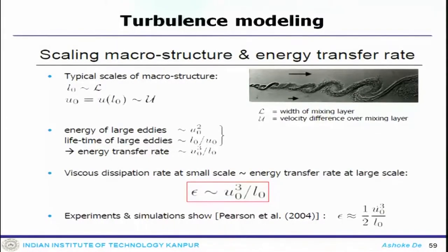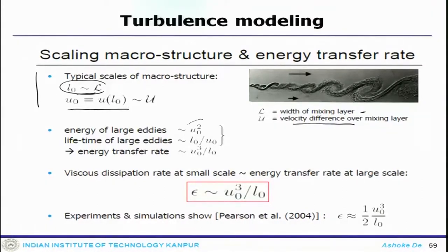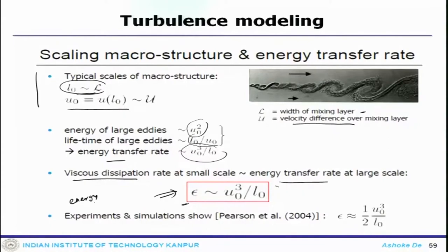To scale the energy and the macro structure rate: the picture shows how large scale eddies are formed. The width of the mixing layer and velocity U gives the macro structure length scale, which for a channel would be on the order of the channel diameter and inlet velocity. The energy of the large scales is of order U_0^2; the time scale is L_0/U_0; and the energy transfer rate is U_0^3/L_0. The viscous dissipation rate at small scale must be the same order as the energy transfer rate at the large scale, and epsilon (kinetic energy dissipation) can be estimated accordingly.